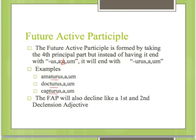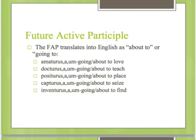Translating the future active participle into English: it translates as 'about to' or 'going to.' So amaturus means going to or about to love; docturus means going to or about to teach; positurus means going to or about to place; capturus means going to or about to seize; inventurus means going to or about to find.